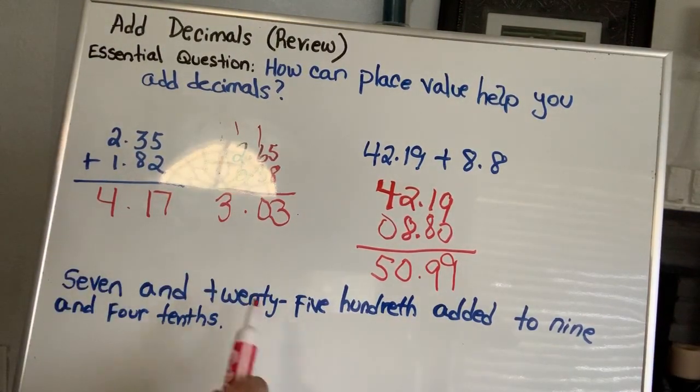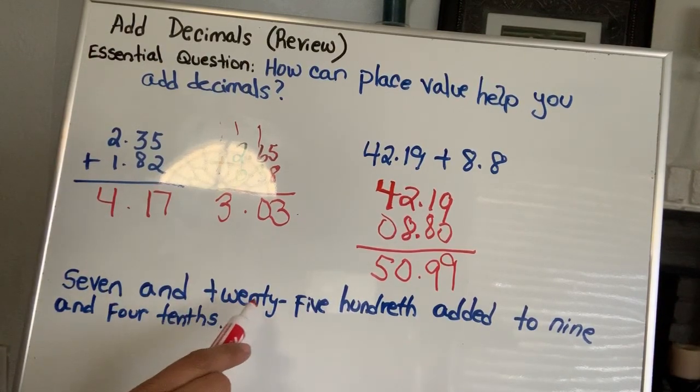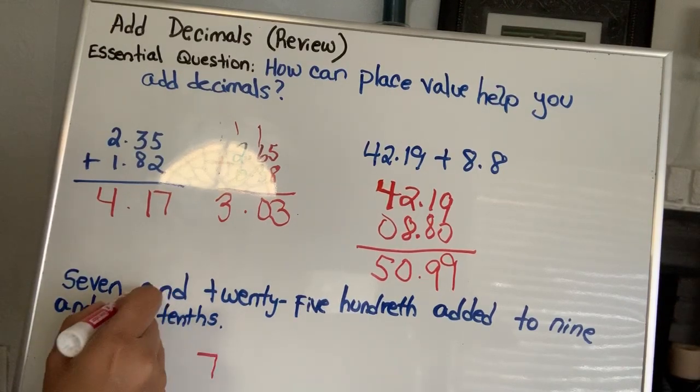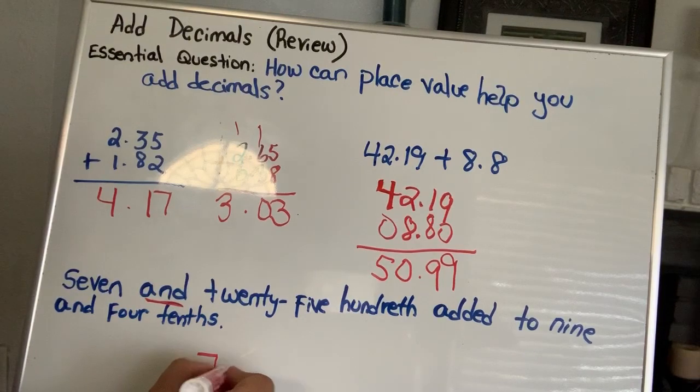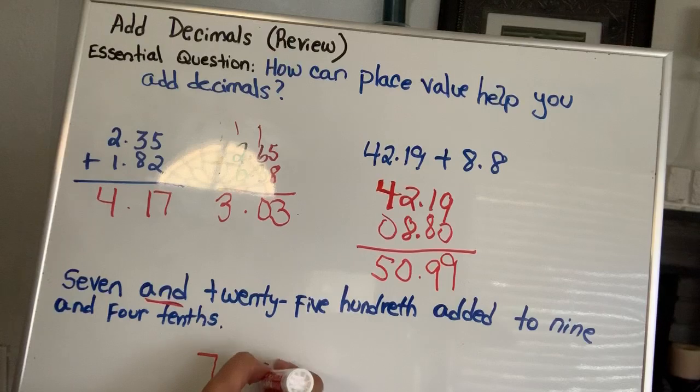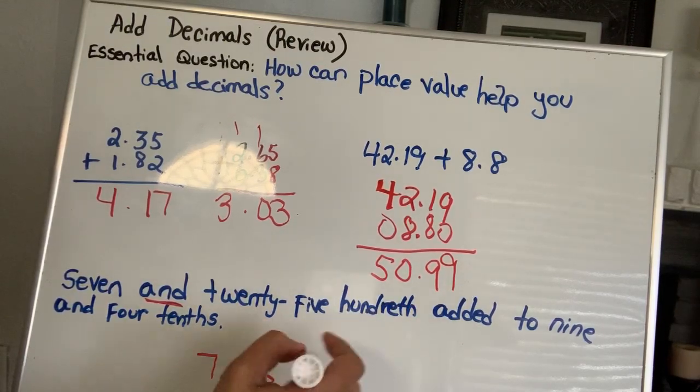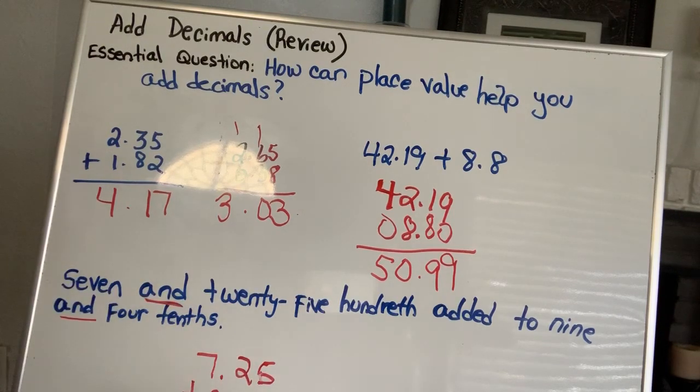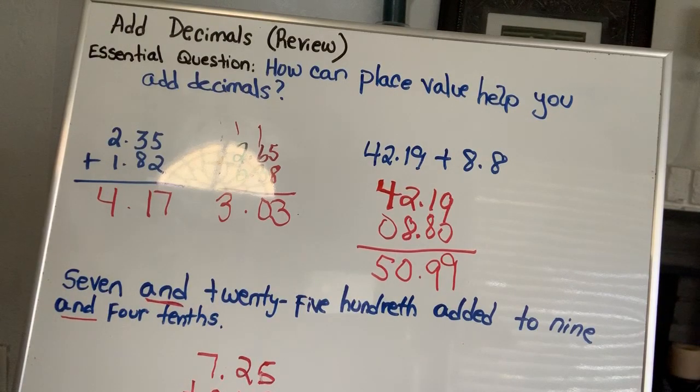Now, one last example I want you to look at, but this one I have the words written out for you. So, I have 7 and 2,500th added to 9 and 4 tenths. So, I'm going to write that down, 7. Remember that the word and is going to represent the decimal. Now, 2,500th is going to be 2 and 5. And then, you add it to 9 and, again, the word and means you're adding a decimal. 4 tenths. 4 tenths means it's in the tenth place, so I'm going to put the 4 in the tenth place. Now, I got nothing here, so what do you do? If it makes you feel better, you add a 0 to it, just to fill out the space. And then, you add them normally. And your answer is going to be 16 and 65 hundredths.